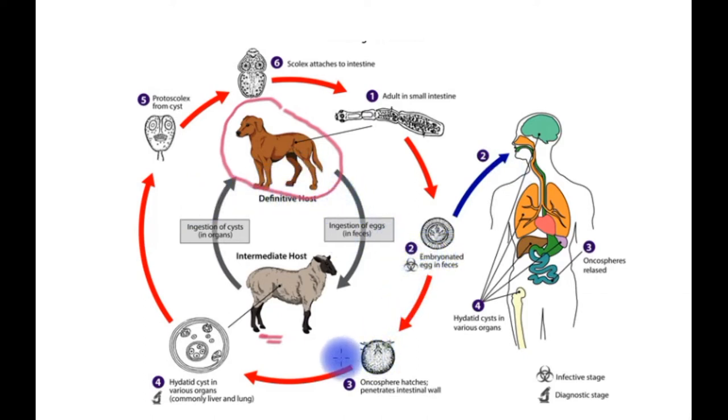These eggs pass into the small bowel where they hatch and break through the bowel wall into the bloodstream, then end up in far-off organs, commonly the liver, a little less commonly in the lungs, and occasionally in other parts such as the brain, the spleen, even the bone and skin.